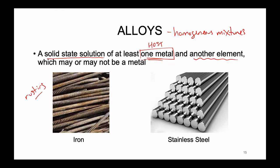However, if we add a couple of additional elements in trace amounts to iron through some type of smelting process, we can create something known as stainless steel. There are different types of stainless steel depending on what elements exactly we're adding, but the most common two elements that get added to iron to create stainless steel are carbon and chromium. We're not adding enough carbon to make an ionic compound — just trace amounts, just a couple of little pieces of carbon in there.